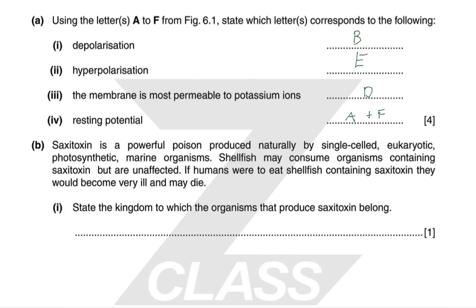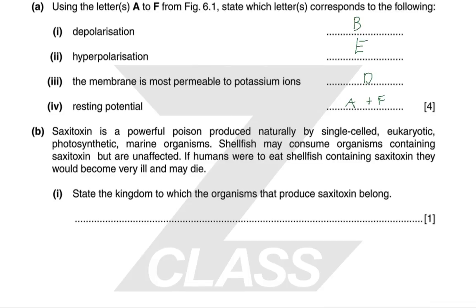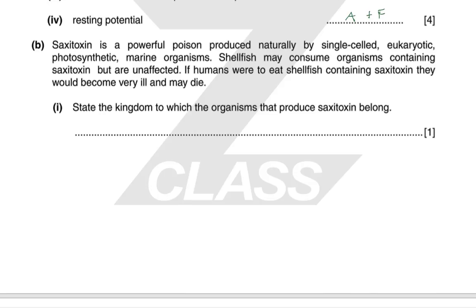Saxitoxin is a powerful poison produced naturally by single-cell eukaryotic photosynthetic marine organisms. Shellfish may consume these organisms but are unaffected; however, if humans eat shellfish containing saxitoxin they would become very ill and may die. The kingdom of the organism that produces saxitoxin is Protoctista — they are single-cell eukaryotic photosynthetic marine organisms.